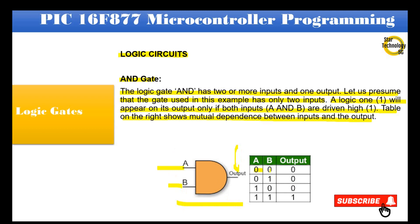AND gate truth table: If both inputs A and B are logic 0, then the output is logic 0. If input A is logic 0 and input B is logic 1, then the output is 0. If input A is logic 1 and input B is logic 0, then the output is logic 1.